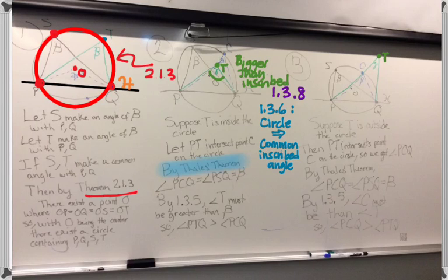And respectively we get a smaller than inscribed angle when the point is outside the circle. Those two together imply that we will get an equal to inscribed angle exactly when that point is on the circumference of the circle itself.